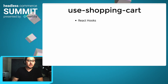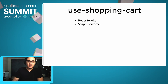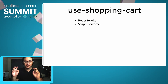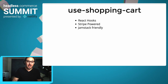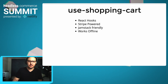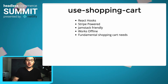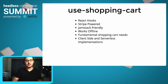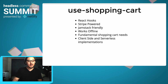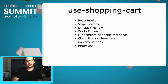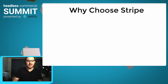So let's talk about useShoppingCart. It's built on React Hooks, it's Stripe-powered, it's Jamstack friendly, works offline — which is just a fancy way of saying it stores data on local storage. It handles all of your fundamental shopping cart needs, and there's two different ways to implement it: client-side mode and serverless mode. It's pretty cool, you should check it out.